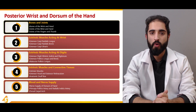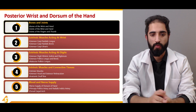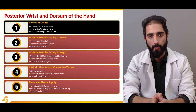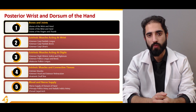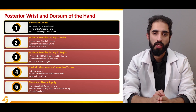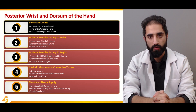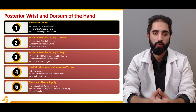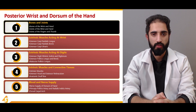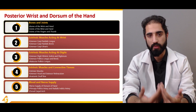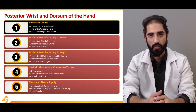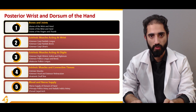In this first part of the lecture series, we will talk about the bones and joints of the wrist and hand, as well as the joints of the fingers and thumb. This will be much the same as when we discuss the palmar or ventral aspect of the hand and anterior wrist, since the bones and joints remain the same in both contexts. It is still important to cover them before moving on to muscles, connective tissues, nerves, and blood supply.